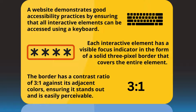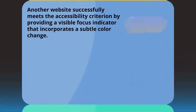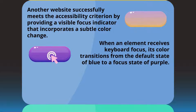The border has a contrast ratio of 3 to 1 against its adjacent colors, ensuring it stands out and is easily perceivable. Another website successfully meets the accessibility criterion by providing a visible focus indicator that incorporates a subtle color change. When an element receives keyboard focus, its color transitions from the default state of blue to a focused state of purple.